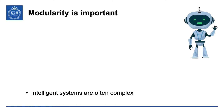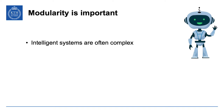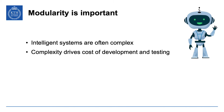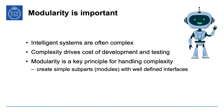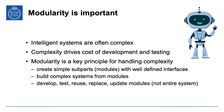Modularity is important. Intelligent systems such as robots or self-driving cars are often very complex, and complexity drives costs of development and testing. Especially if you have a product that you want to add features to over time, complexity tends to increase. Modularity is a key principle for handling this complexity. By creating simple subparts — so-called modules — with well-defined interfaces, you can build your complex system from these modules, and in turn develop, test, reuse, replace and update them one at a time without having to think of the entire system.